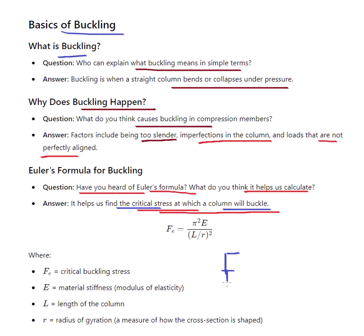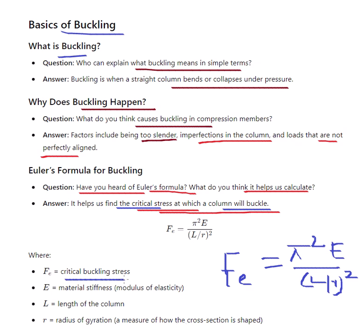The Euler formula: Fe = π²E / (L/R)². Here, E is the modulus of elasticity — material stiffness. L is the effective length, and R is the radius of gyration — that is the measure of how the cross-section is shaped. This is the critical buckling stress formula.